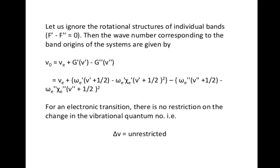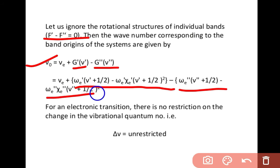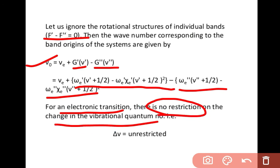If we ignore the rotational structure of individual bands, we can set F' − F'' = 0. Then the wave number corresponding to the band origin of the system can be written as: V₀ = V_e + G'(v') − G''(v''). Also, for an electronic transition there is no restriction on the change in vibrational quantum number — that is, ΔV is unrestricted.